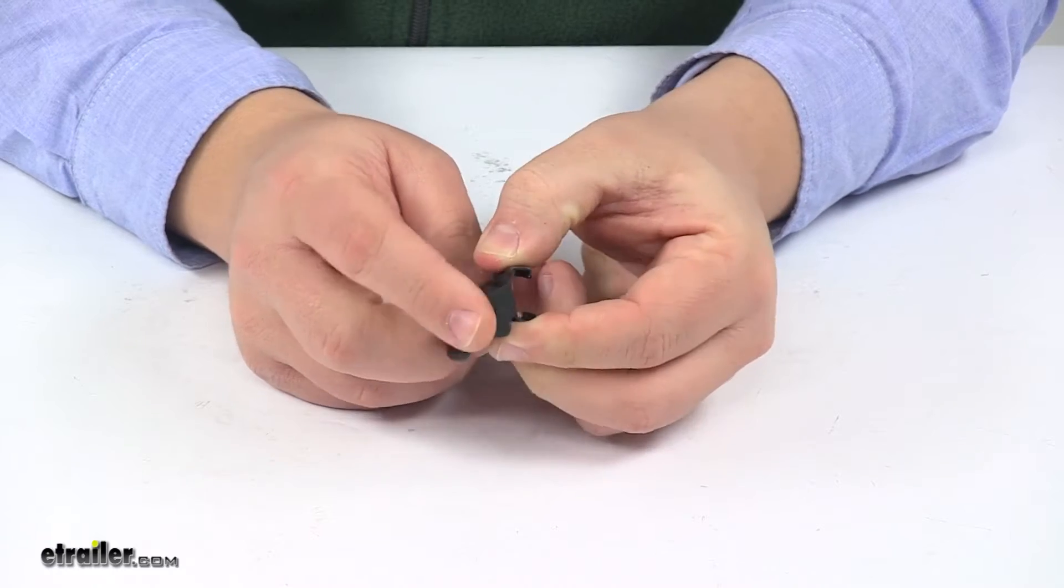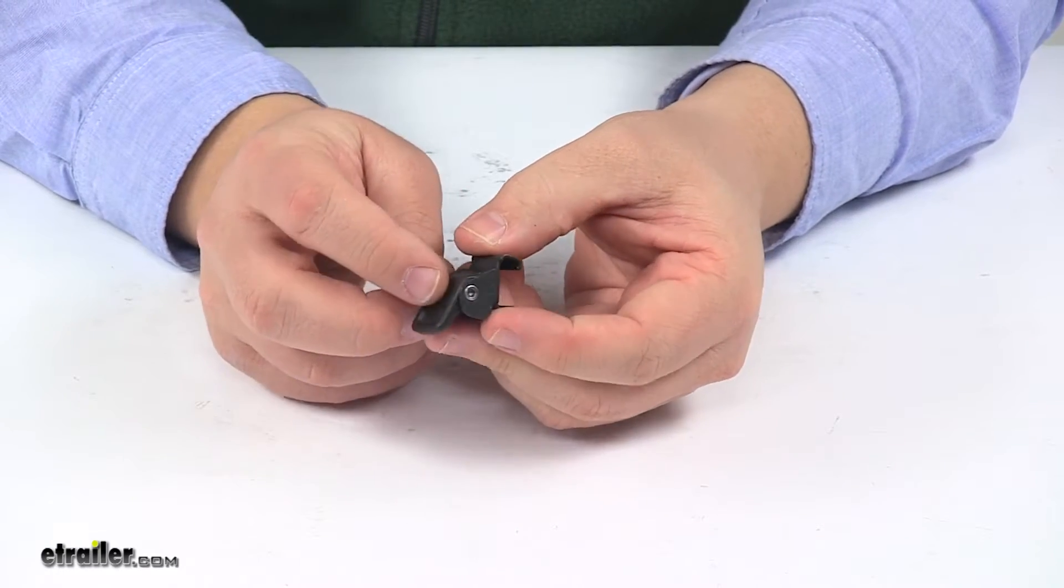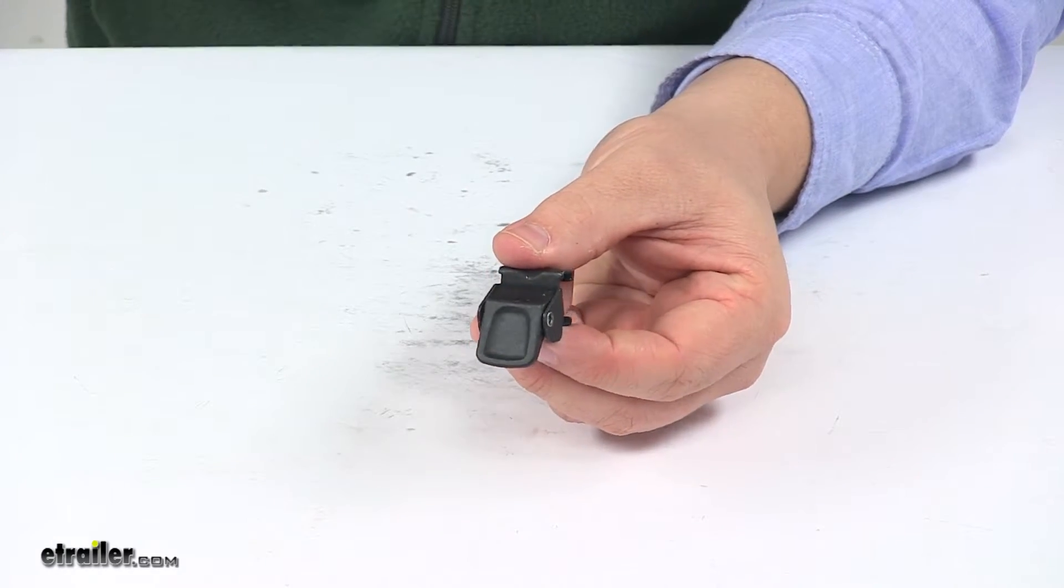That's going to do it for today's look at the replacement wheel strap button for the Thule Criterium roof mounted bike rack.